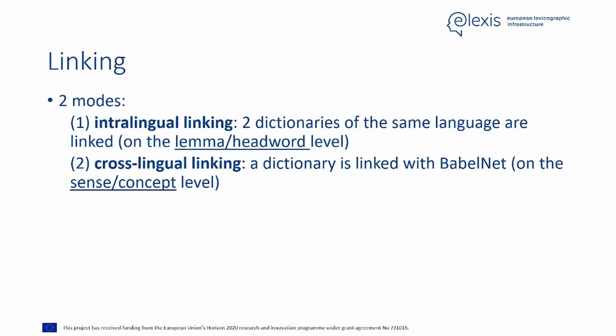Let's delve a bit deeper into the concept of linking. There are two modes of linking. First, intralingual linking, where two dictionaries of the same language are linked — this is at the lemma or headword level. Second, cross-lingual linking, which is linking with BabelNet, where a dictionary in any language is linked with BabelNet, and this is at the sense level.